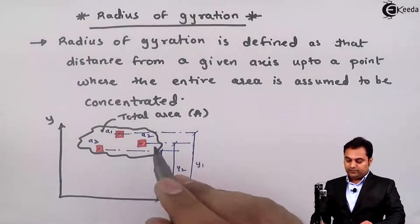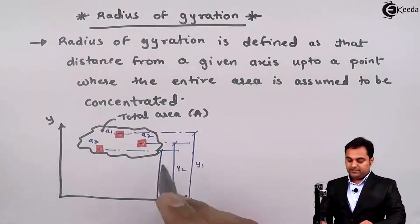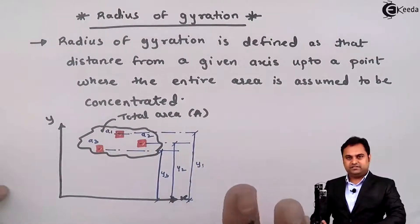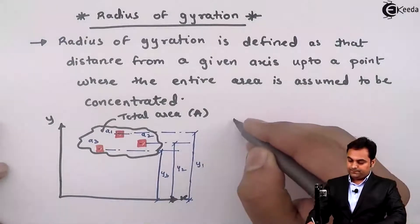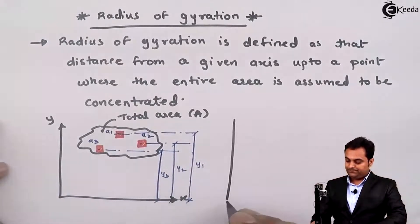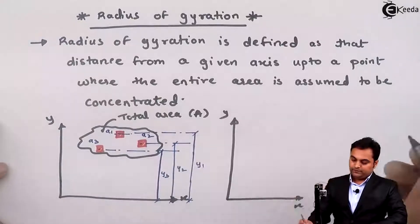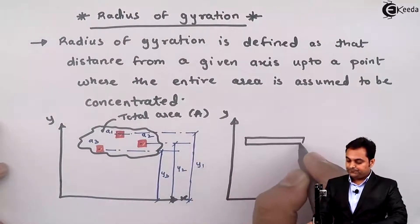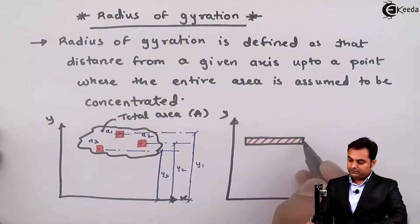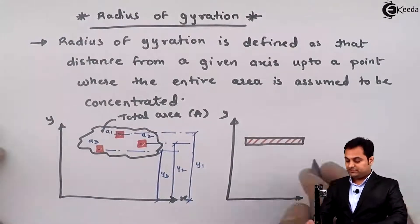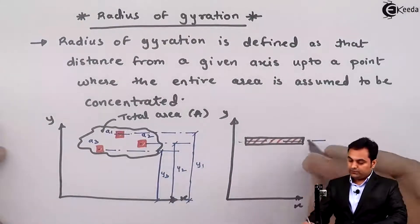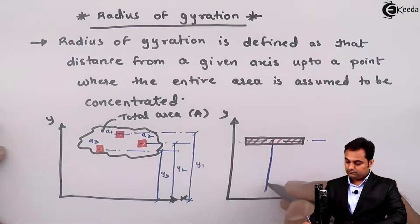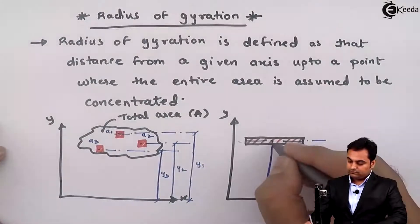A1 is at distance y1, A2 is at y2, and A3 is at y3. Now, for this example I am considering that the entire area is in the form of a strip, and the distance of this strip area with respect to the x-axis is k.